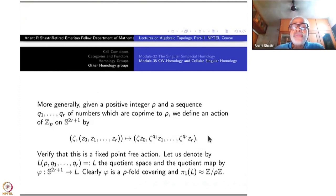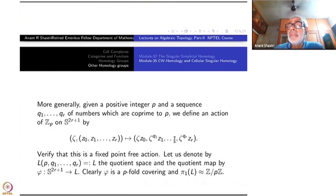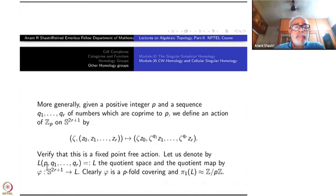Once again you have to use the fact that Q₁ through Q_R are co-prime to P to say that this will be a homeomorphism of order P — a fixed-point free action. So if you take the quotient, let us use simple notation L = L(P; Q₁, Q₂, ..., Q_R). This is a lens space of type (P; Q₁, Q₂, ..., Q_R). P has a different role; P tells you what ζ is doing — it is a primitive P-th root of unity.